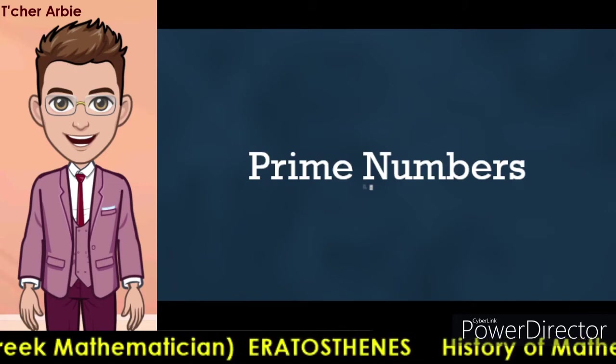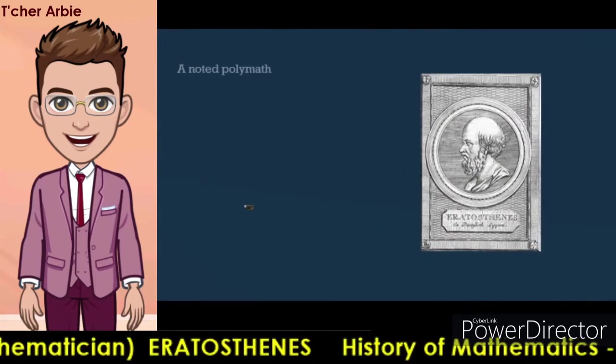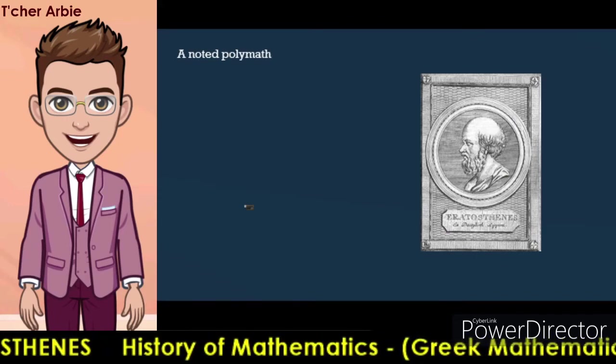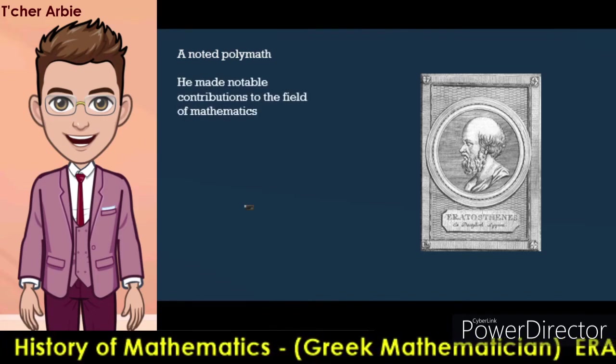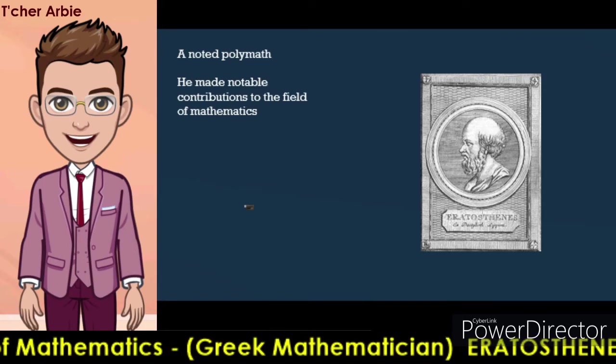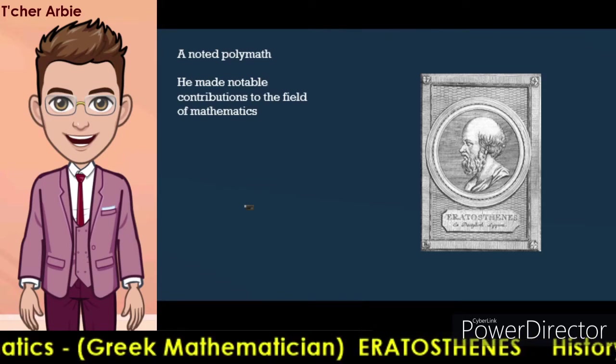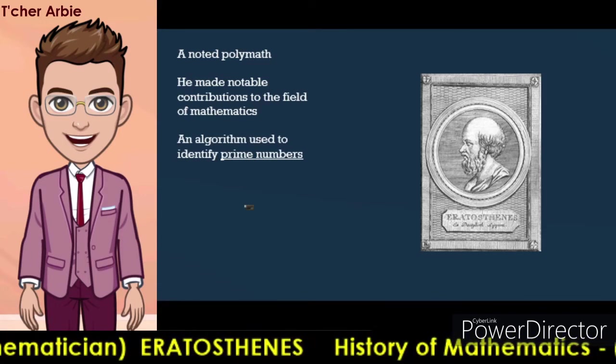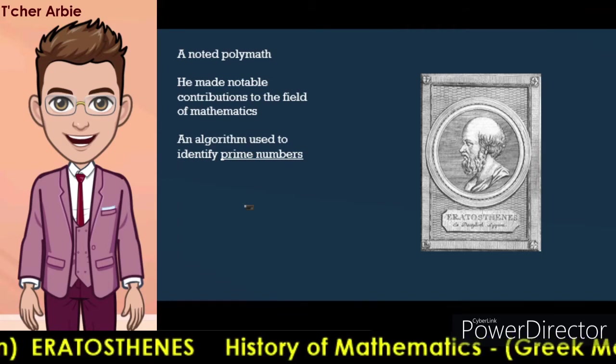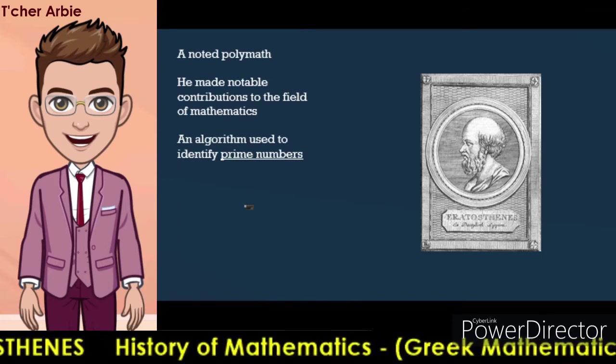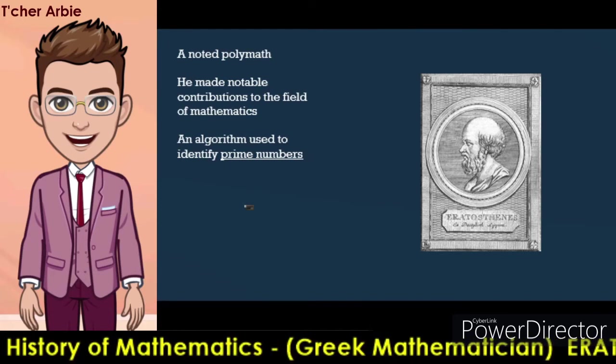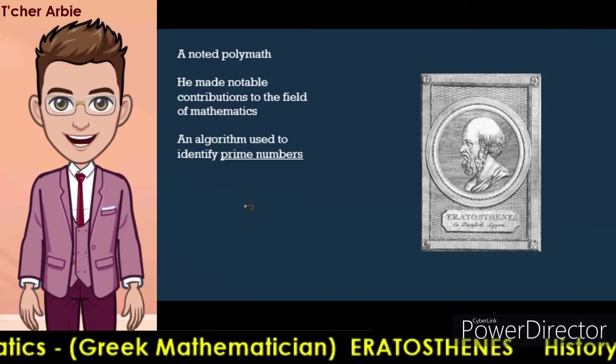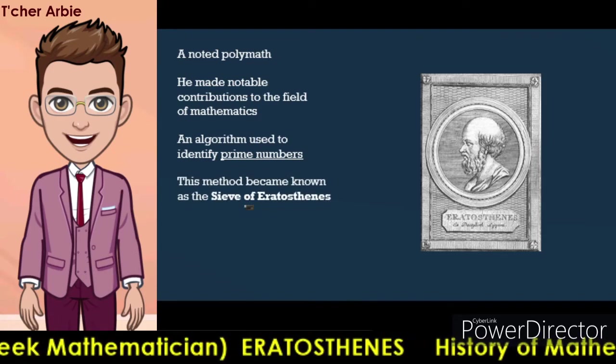What is all about prime numbers? A noted polymath, Eratosthenes also made notable contributions to the field of mathematics, including the invention of an algorithm used to identify prime numbers. His method involved taking a table of whole numbers—one, two, three, etc.—and striking out the multiples of each prime, beginning with multiples of the number two, then multiples of the number three, etc., until only the prime numbers remained.